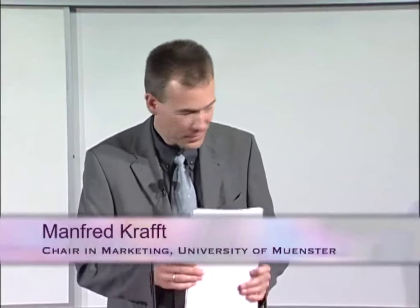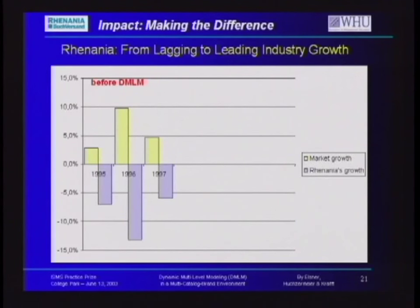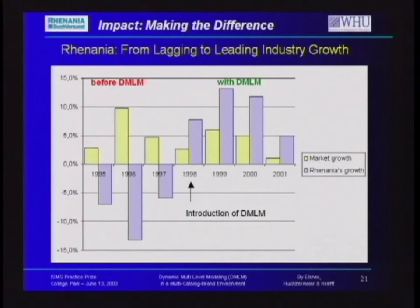Good morning, and thank you, Arndt, for the introduction. I'm the marketing guy, so I have to sell the impact of DMLM on the company. Renanya was in serious economic troubles in the late 90s, especially in late 1997. The numbers in 1995, 96, 97 show that Renanya actually shrank compared to the overall market while the market still had growth. Beginning from 1998, when we introduced DMLM, Renanya outperformed the market by far. The overall market had growth of about 3.7 percent, and Renanya achieved an average sales growth of about 10 percent.